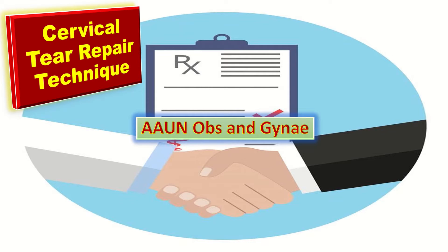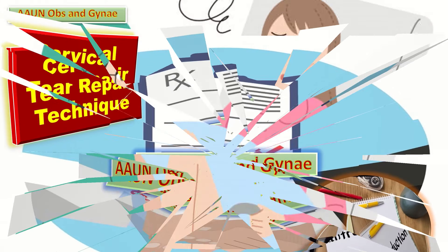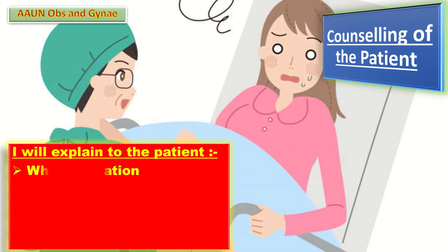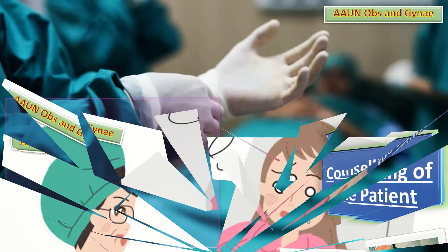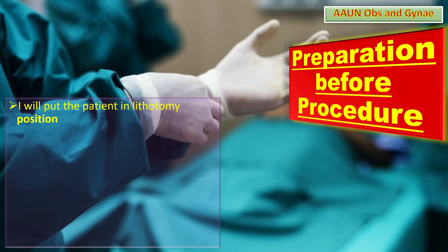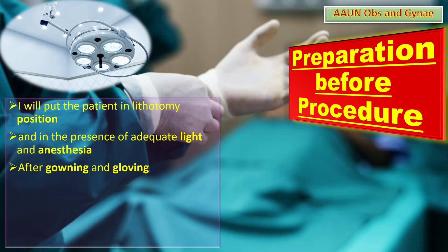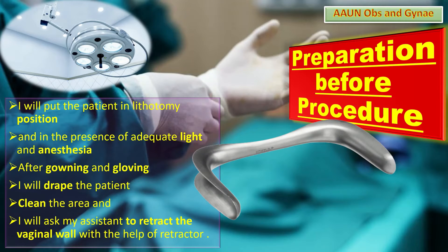Let us talk about the cervical tear repair technique. In the DOCKS and OSCE station, I will introduce myself to the patient and take her introduction. Next comes counseling — I will explain the whole situation, procedure of repair, and its possible complications, and take informed consent. For preparation, I will place the patient in lithotomy position with adequate light and anesthesia. After gowning and gloving, I will drape the patient, clean the area, and ask my assistant to retract the vaginal wall with a retractor.